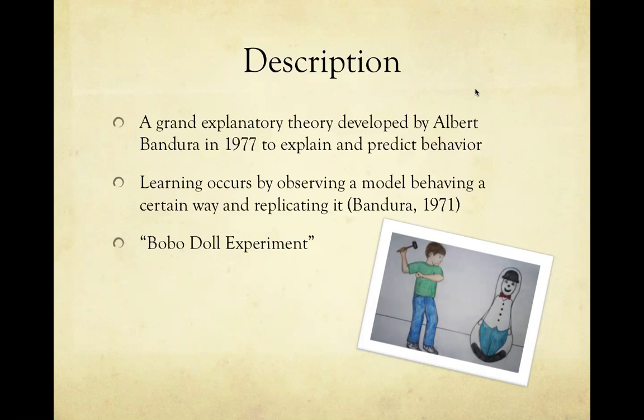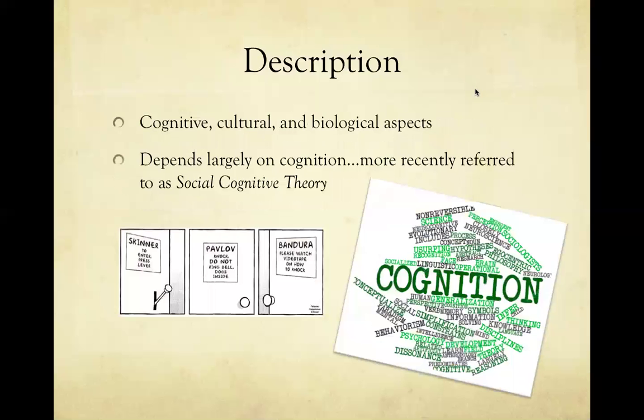In this experiment, called the Bobo doll experiment, Bandura took 36 boys and 36 girls aged three to six and separated them into three groups: the control group, aggressor group, and passive group. The children were put in the corner of a room with toys they could not touch. In the experimental groups, an adult role model was present to either express aggressive behavior with the doll or play passively. After increasing the children's frustrations, they were taken to another room where they were allowed to play with toys. The results showed that those kids exposed to an aggressive model were more likely to show aggressive behavior.